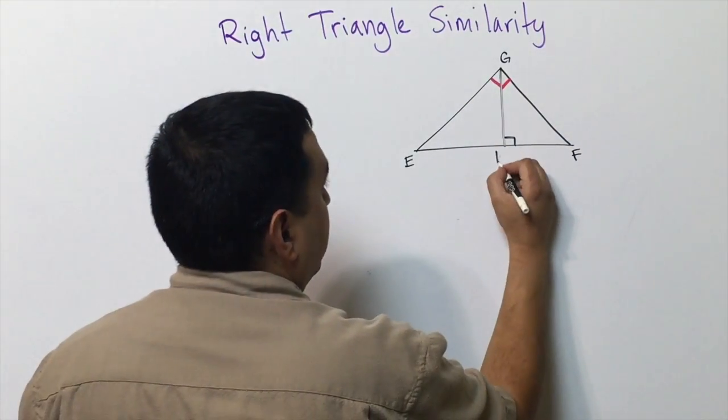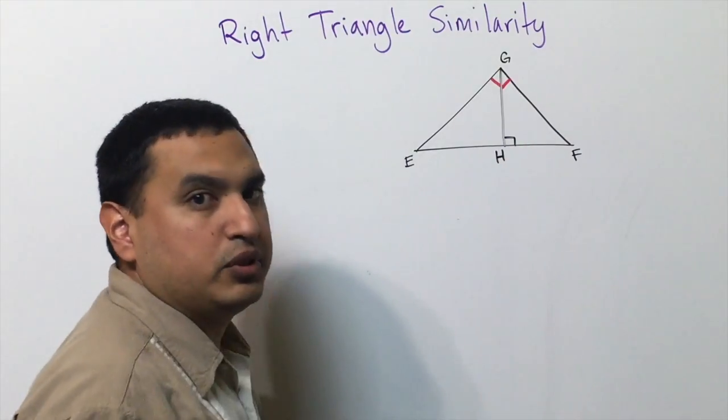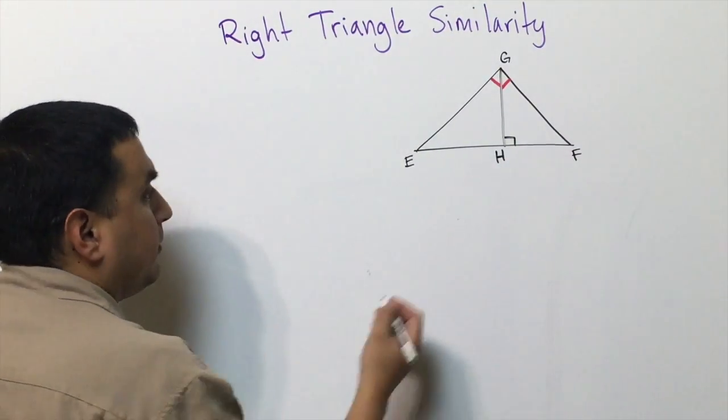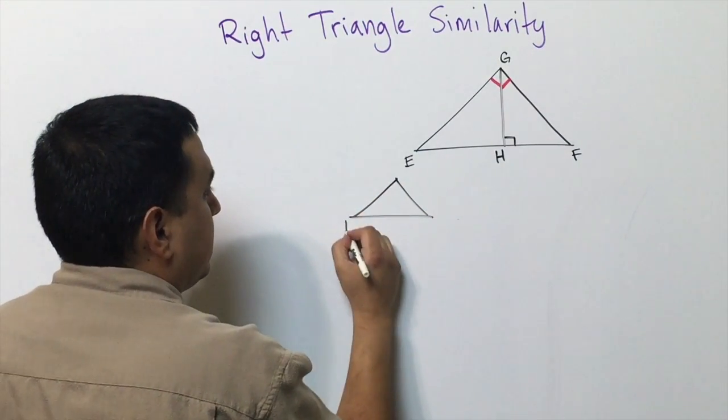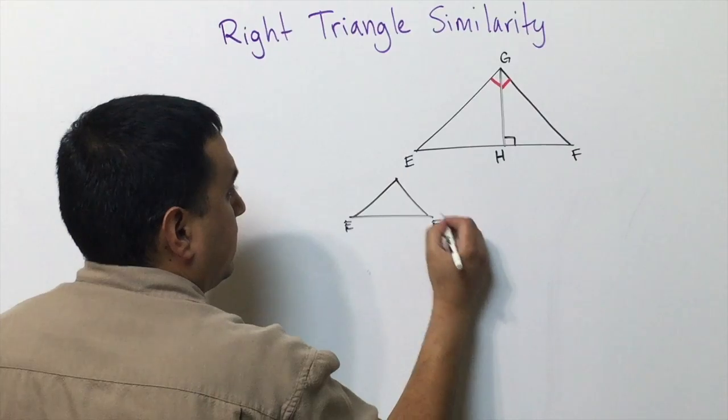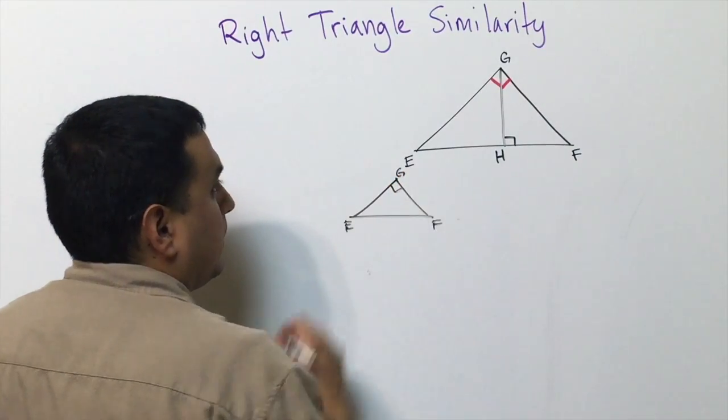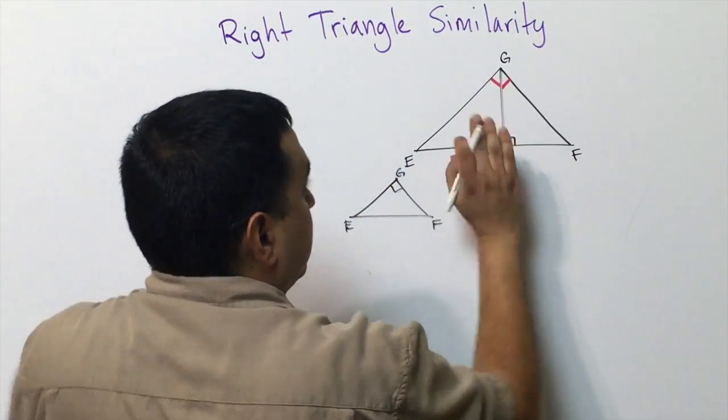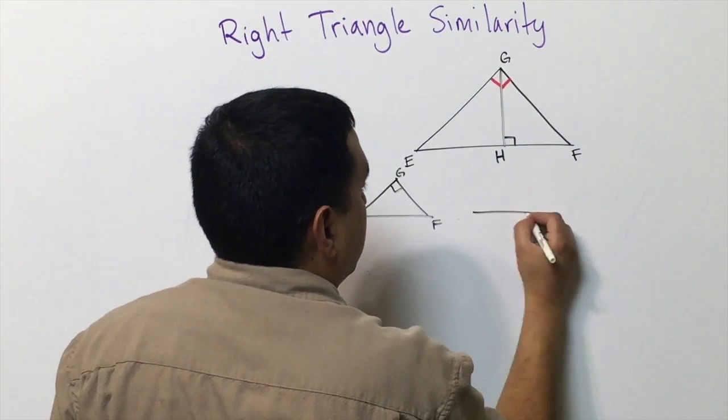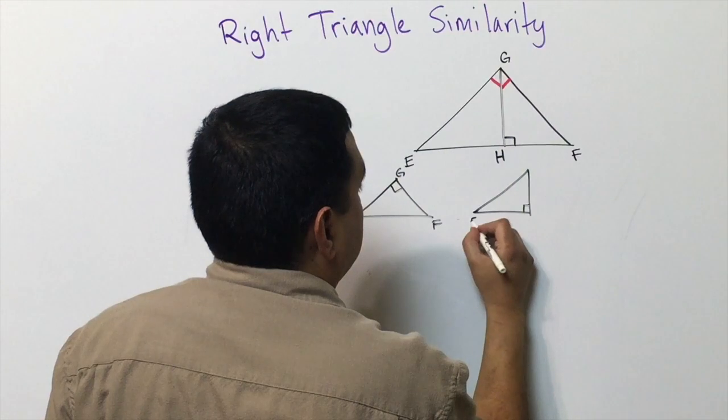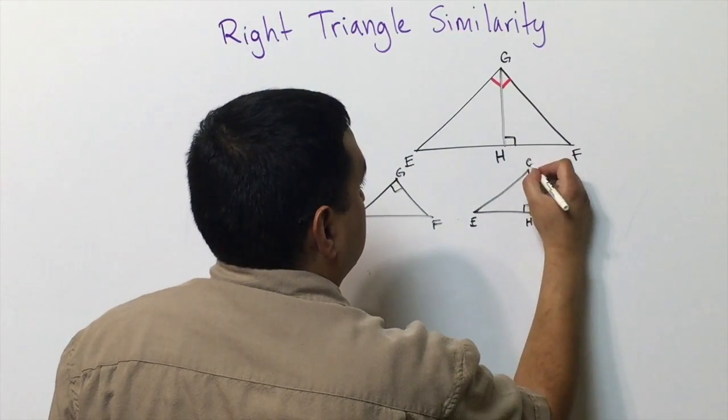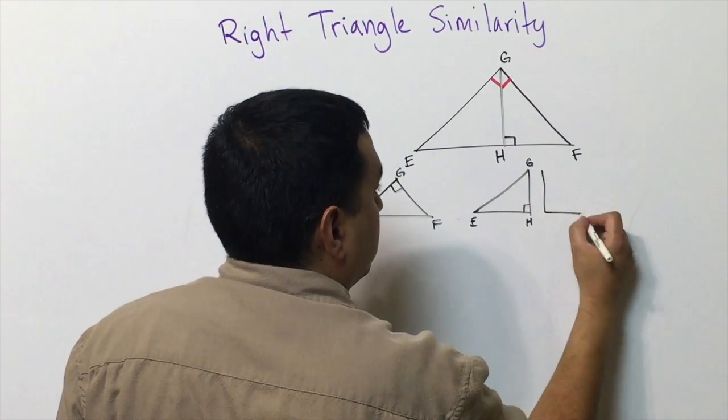What happens is I form three similar triangles. The first one is the original triangle that we had here, E F and G, and then I can take this line here and I split it into two different triangles. So I have this one and then I have the small one.